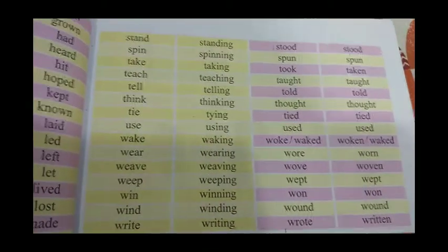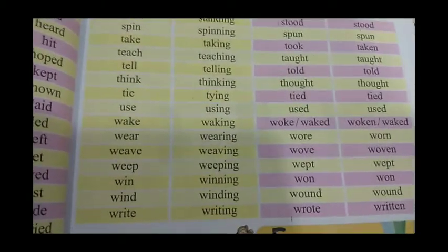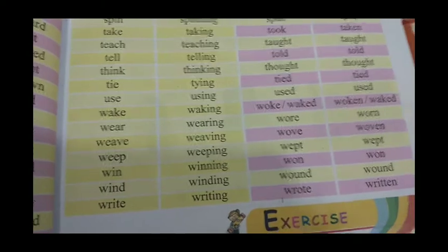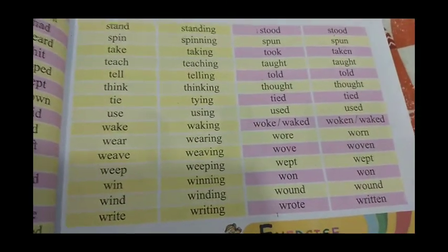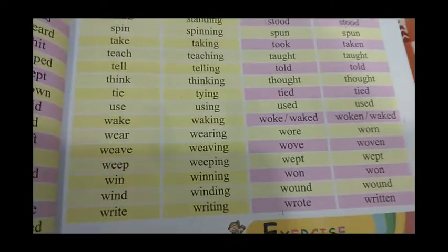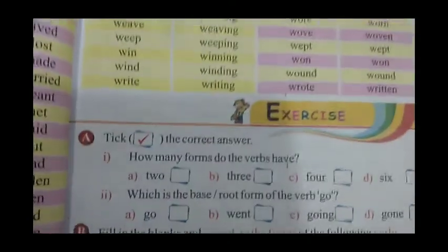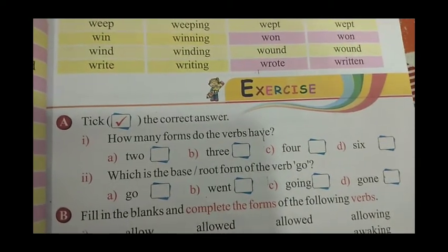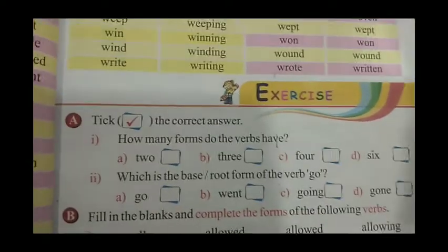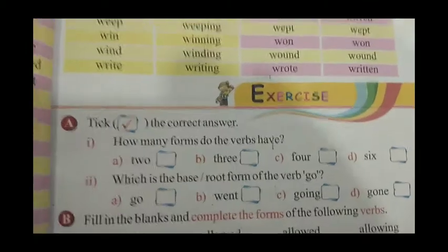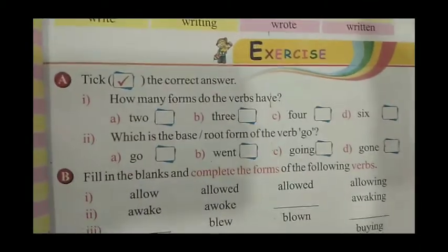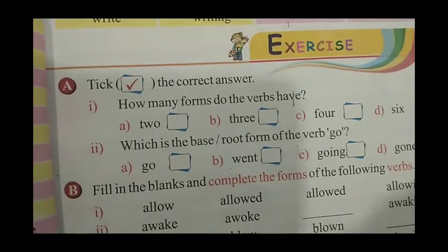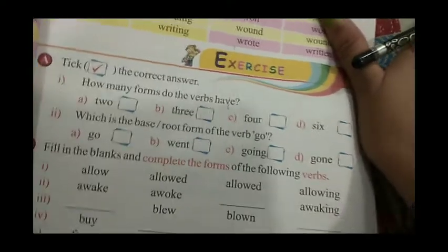And we have also seen where spellings are not changing. So you have to read these once again and remember which words have forms that remain the same. Now we are going to start the exercise given on page number 27. Come to the exercise part. Exercise number A is: take the correct answer. So how many forms do the verbs have? 2, 3, 4 or 6?